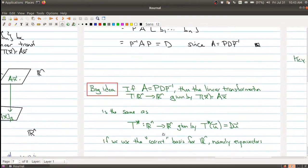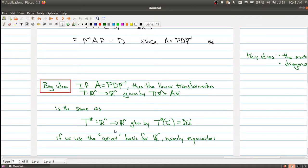So here's kind of the big idea that you might want to take away is that if you have a linear transformation and you can diagonalize it, this linear transformation is really the same as a different linear transformation, Rn to Rn, given by a diagonal map, if we use the correct basis for Rn, namely the eigenvectors of A.